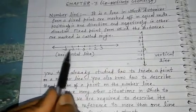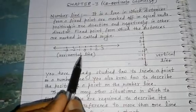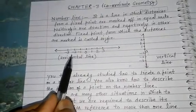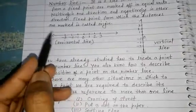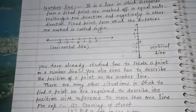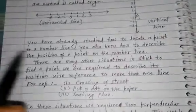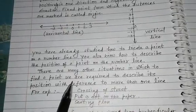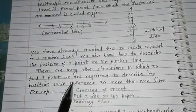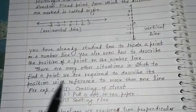In Class 9 you have also studied how to represent an irrational number, and in previous classes you have been aware with the representation of rational numbers. So anyway, these are the basic concepts about the position of a point. But there are many other situations in which, to find a point, we require to describe its position with reference to more than one line.